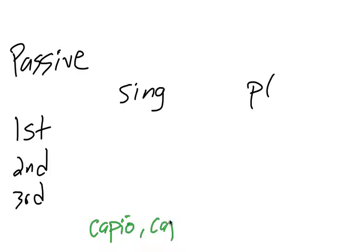Now let's look at the passive. We're going to set up our chart again with first, second, and third, and singular and plural. Our principal parts, we're just going to use the first two. That's all we need: capio, capere. My first principal part is going to go here in the first person singular. And I'm going to take off the e-r-e again to get my consonant stem.